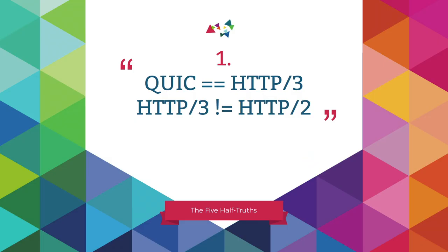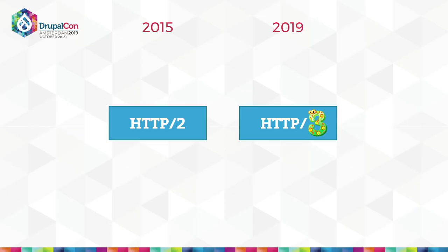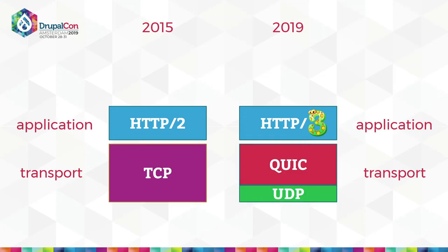The first thing you might have heard is that QUIC was renamed HTTP3 and they're actually the same thing. You might also think that since 2 and 3 are quite different numbers, these are obviously very different protocols. Both of those statements are absolutely not true. We often look at HTTP2 in isolation, but it's actually more like a protocol stack, where HTTP runs on the application layer, and beneath you have the transport layer — with TCP for HTTP2 and now QUIC for HTTP3. So we can immediately see that QUIC and HTTP3 are indeed two completely different protocols running at different parts of the stack.